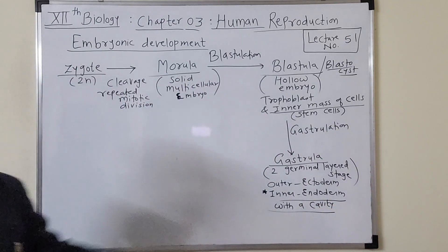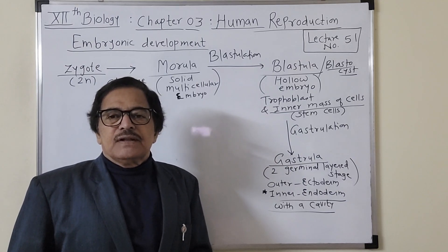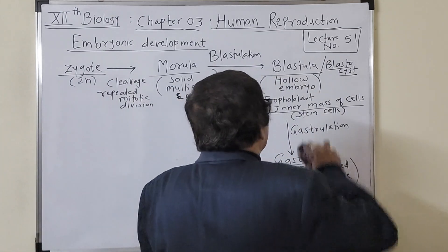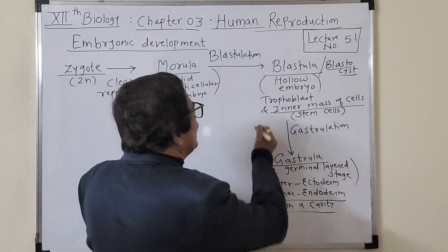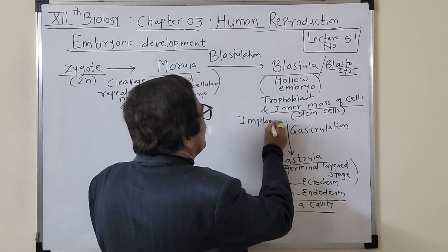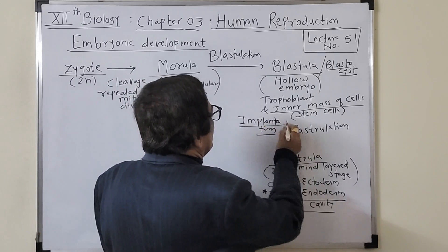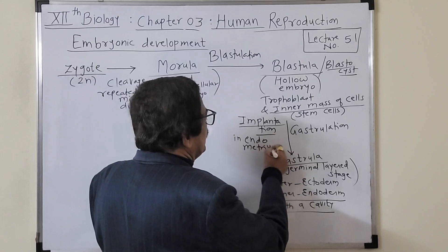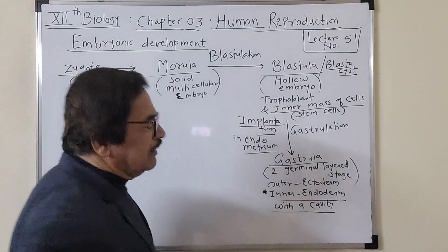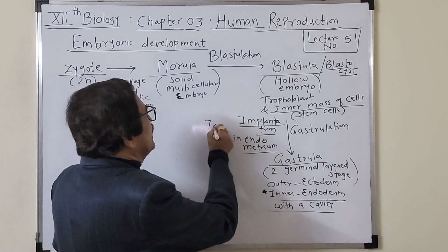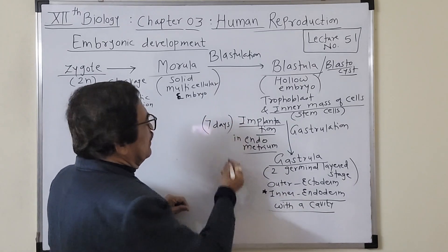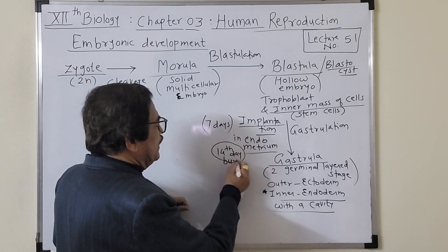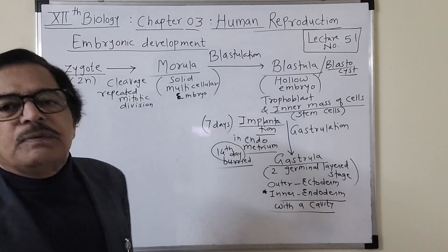Gastrulation occurs after implantation — specifically implantation in the endometrium of the uterus. This process of implantation may be completed within seven days after fertilization, and by the 14th day the embryo gets buried properly into the endometrium.